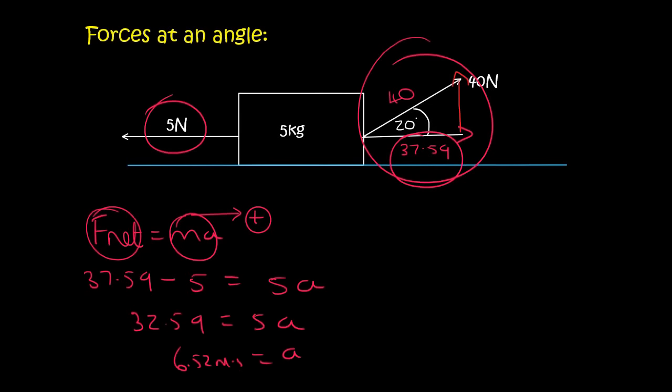Now 37.59 minus 5 is 32.59 equals to 5a and so a is 6.52 meter per second per second and you must say I ran out of space there you must say to the right. That is very important.